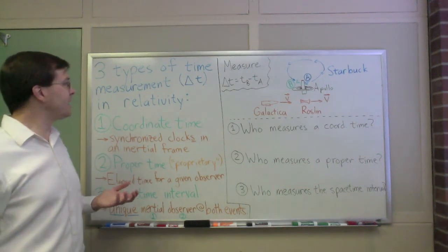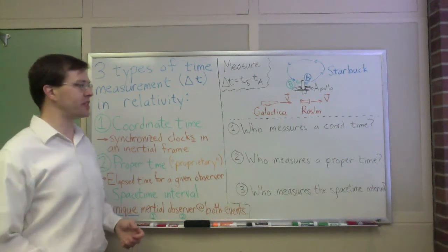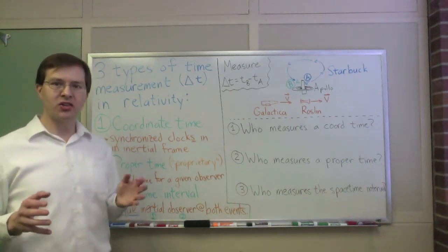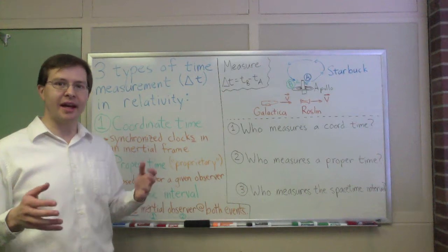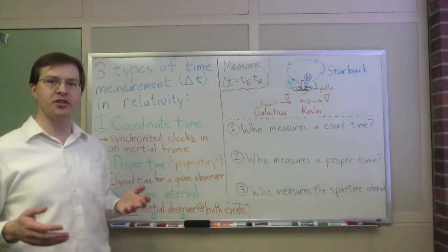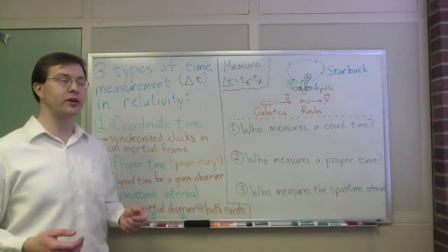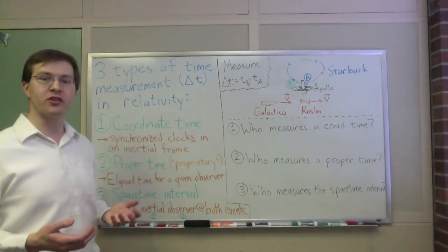I'd like to talk about the three different types of time measurement that we have when we study special relativity. In classical physics, Newtonian Galilean physics, there's only one concept of time. Everyone agrees on time as a universal quantity, but if you've studied any relativity at all, the first thing you learn is that different observers measure time differently.